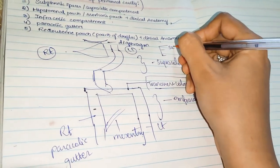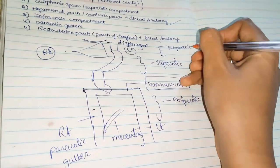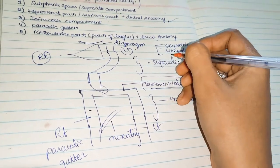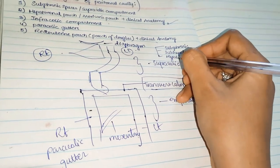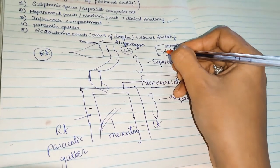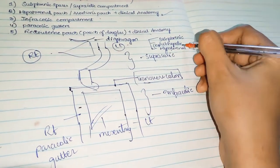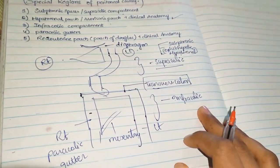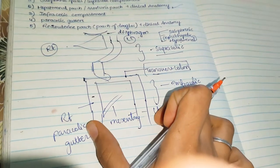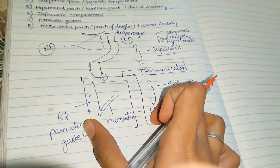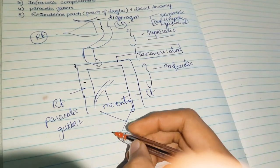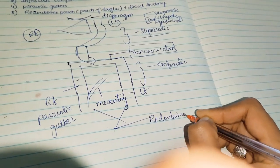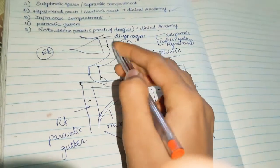The three spaces are: one is subphrenic, one is subhepatic, and one is the hepatorenal pouch. Actually, the subhepatic and hepatorenal pouch are the same, so you can say there are two spaces in the supracolic space. In the infracolic space, we discuss the paracolic gutters. And here in the pelvic cavity, you have the recto-uterine pouch, also called the pouch of Douglas.